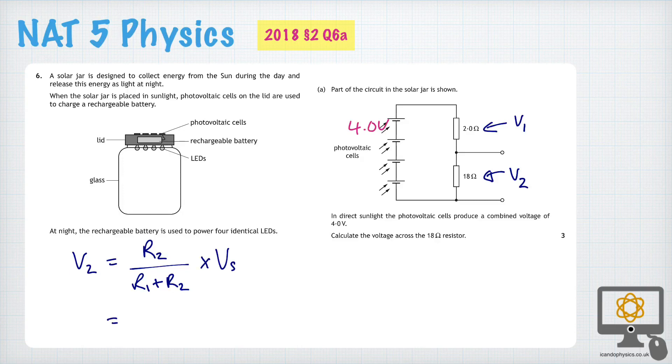And so when you solve that problem you do 18 over 18 plus 2 is 20 times the supply voltage of 4 and that will give you a value of 3.6 volts. And so that's the simplest way to solve the problem.